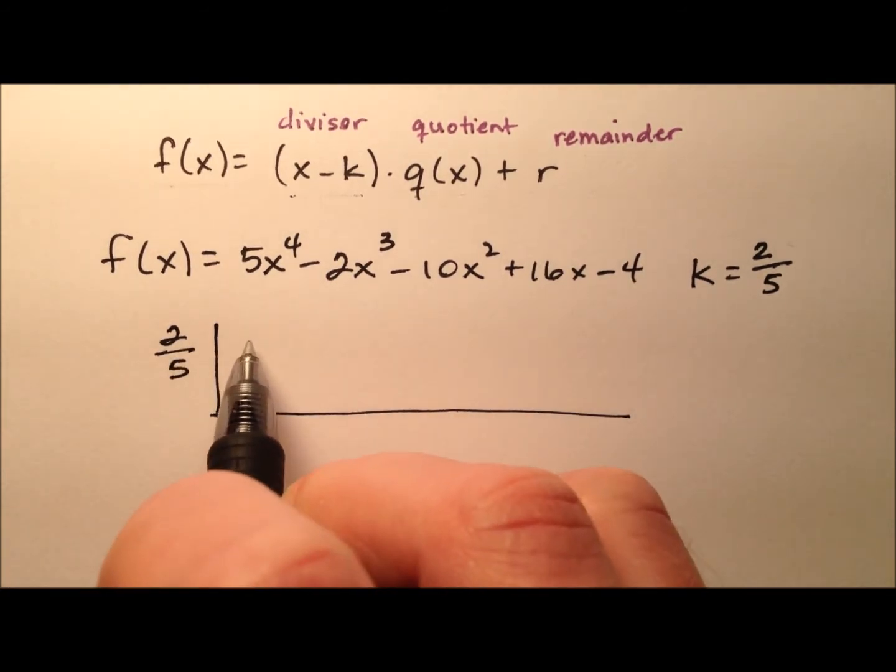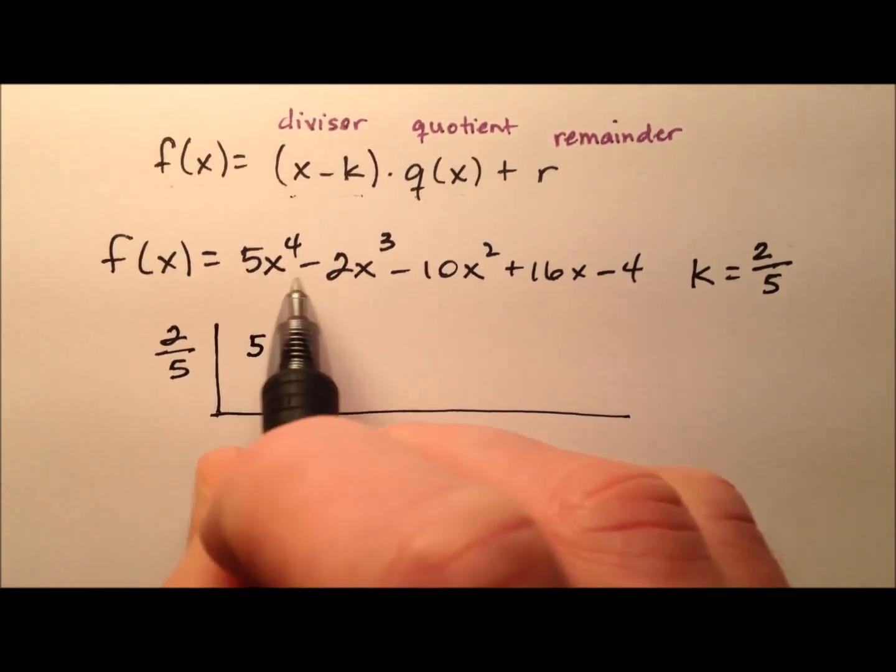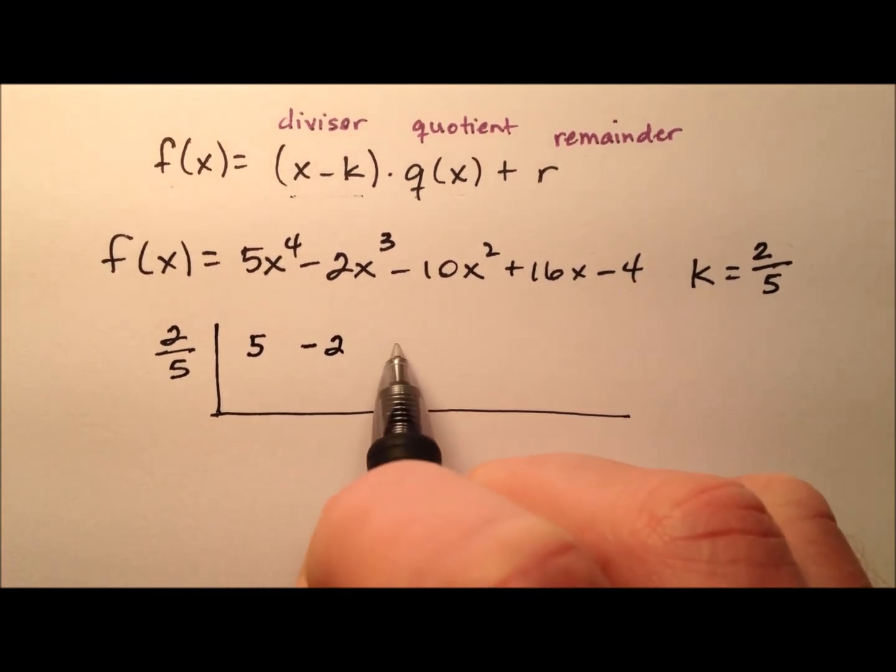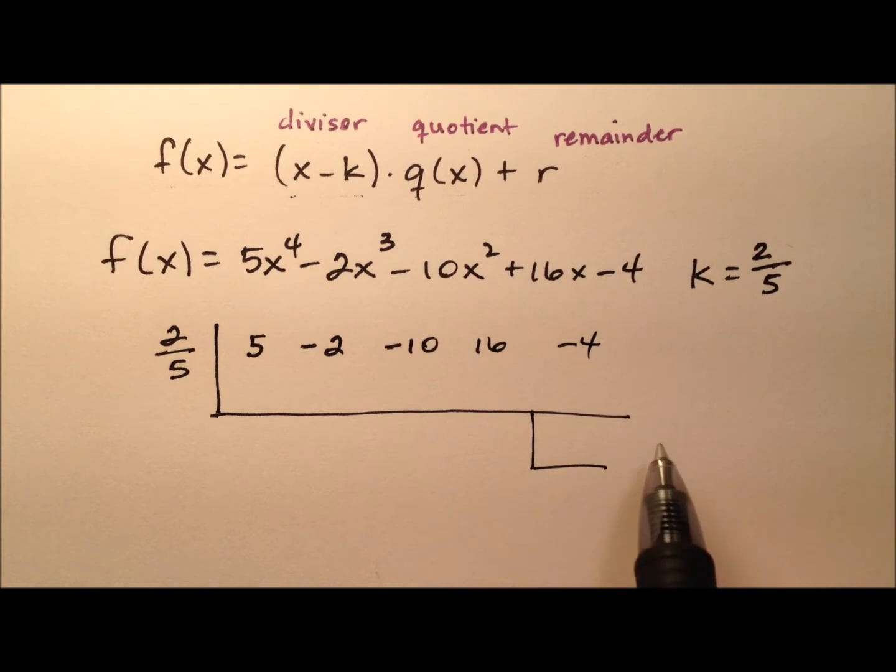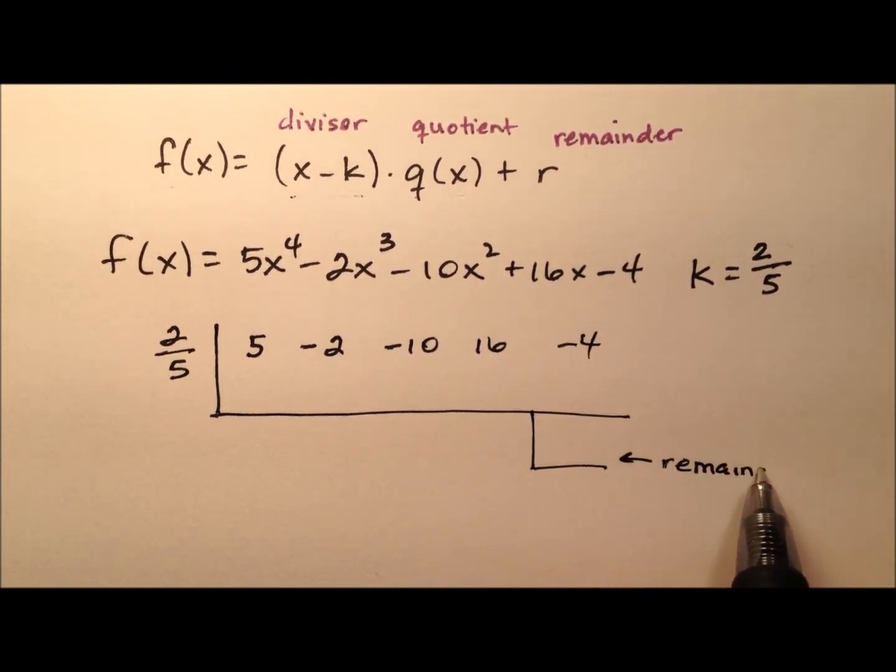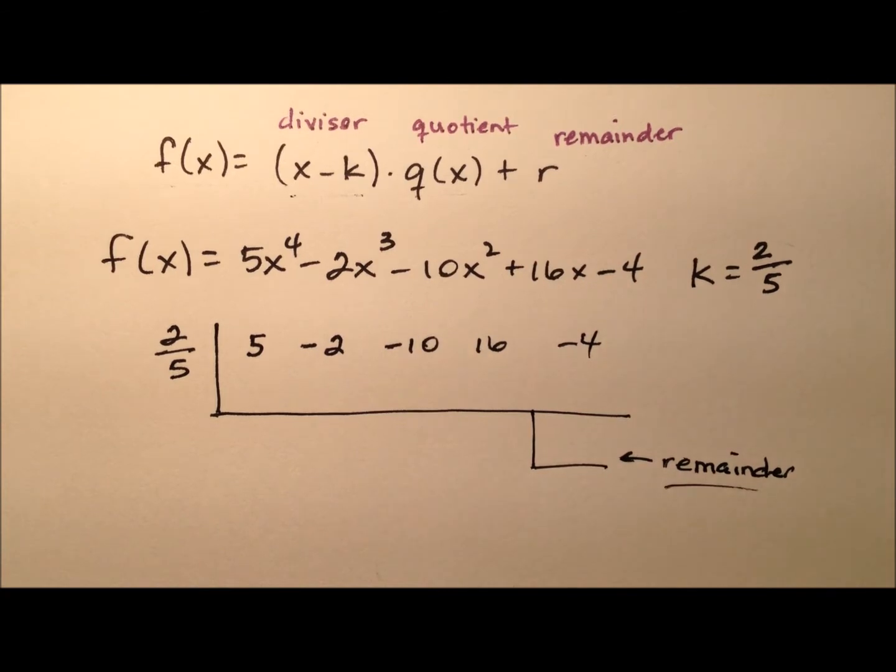With synthetic division, we're concerned about the coefficients: 5, -2, -10, 16, and -4. And this guy right here will be the remainder, so I like to put it in a little box, kind of keep it separate.